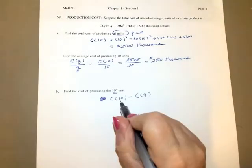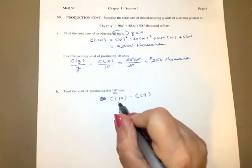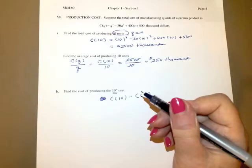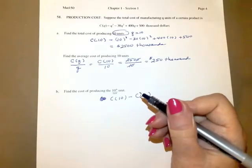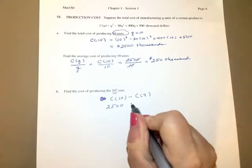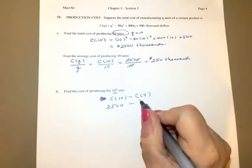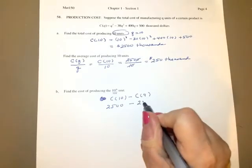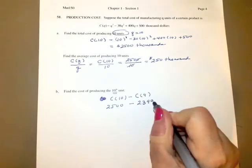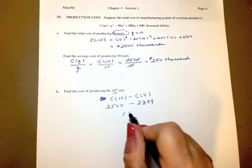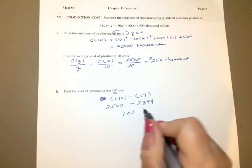So I put 10 in. I know what this number is. So if I put 10 in to C of Q, I know it's 2500 thousand. And if I put 9 in, and again using my handy dandy little calculator, it comes out to 2399. And if I subtract the two, I get 101. And again, this is going to be in thousands.